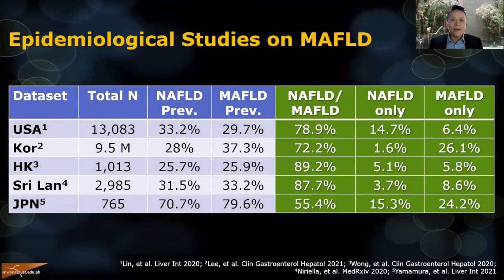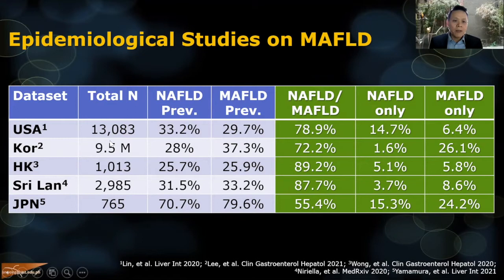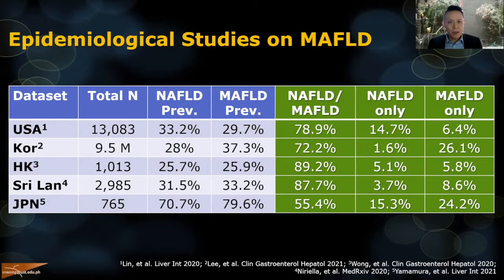The scientific community has been vigilant in trying to prove things. After the MAFLD criteria came out in late 2020, many studies examined its impact on epidemiology. The largest was from Korea with 9.5 million people from the national database. Changing the diagnostic criteria from NAFLD to MAFLD resulted in very little difference in prevalence, and the majority of patients meet both NAFLD and MAFLD criteria.